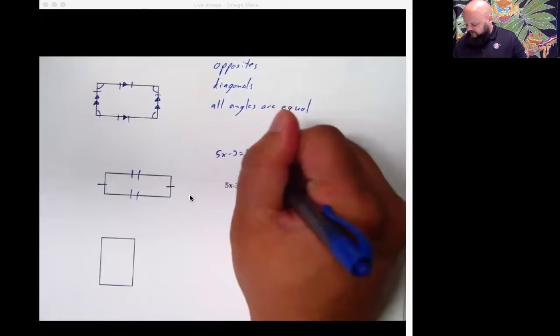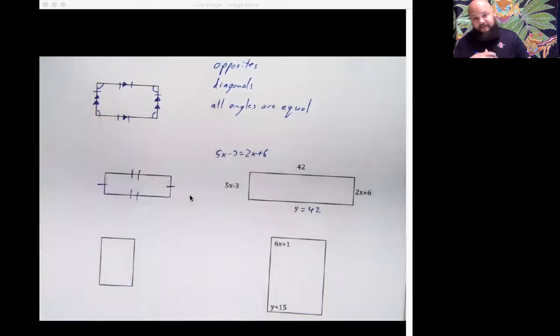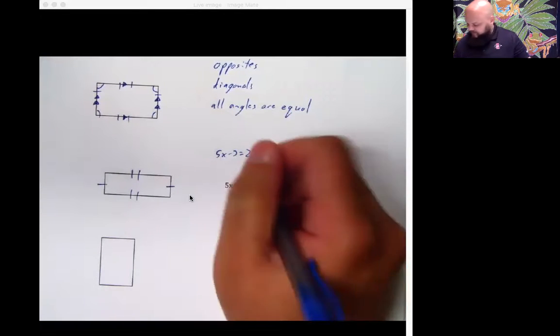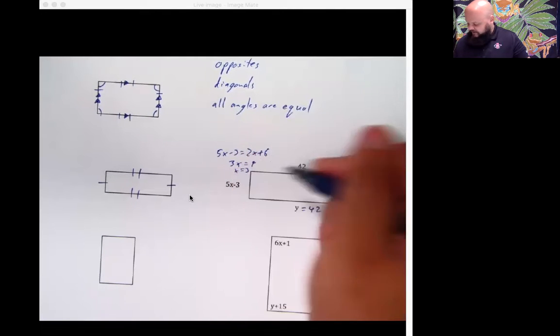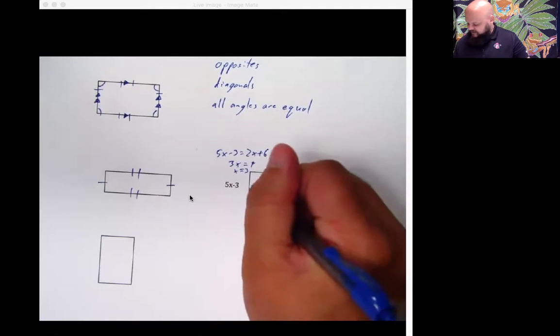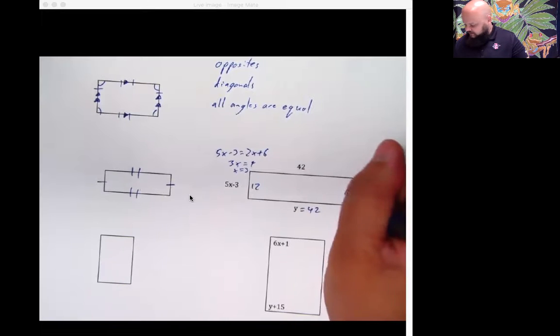5x minus 3 is equal to 2x plus 6. You may have seen this somewhere before. You end up with 3x is equal to 9. X is equal to 3. That means this side has got to be 12. And this side also has to be 12.